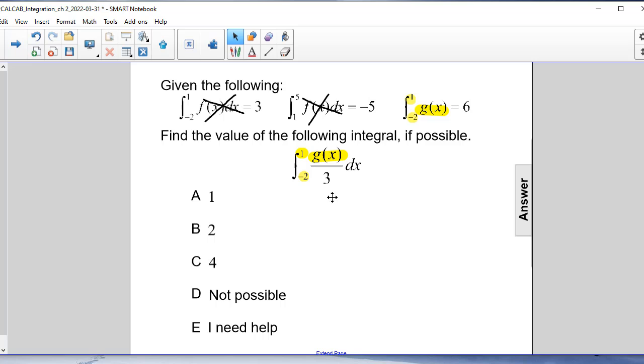We can actually use one of our integral rules because we have an integral where we have a constant k multiplied by a function. In this case, the constant is one-third, so I factor out the one-third, and you'll notice that now we have an exact match.